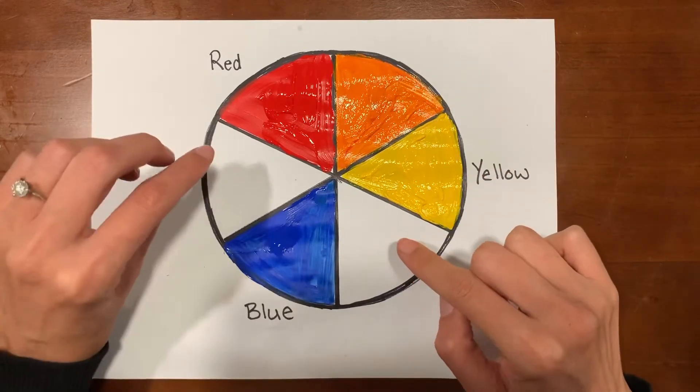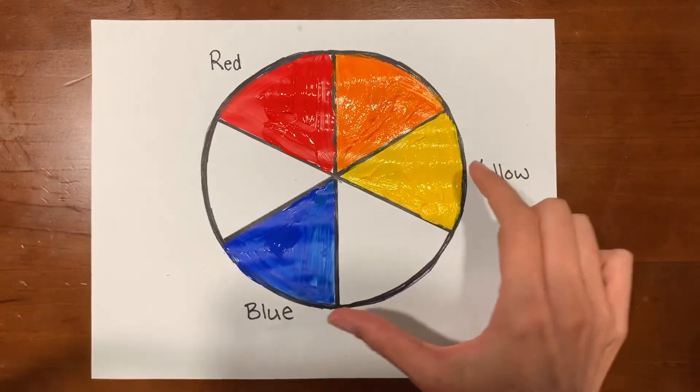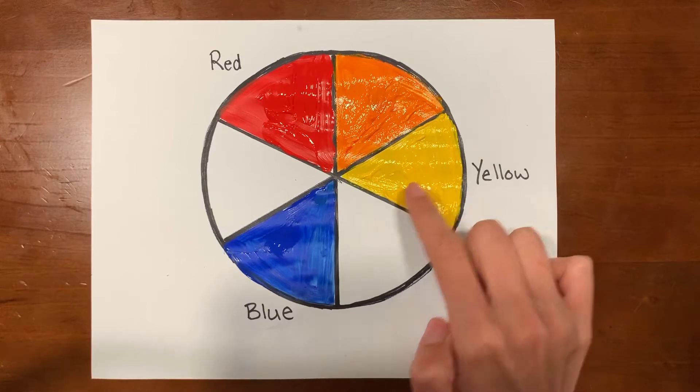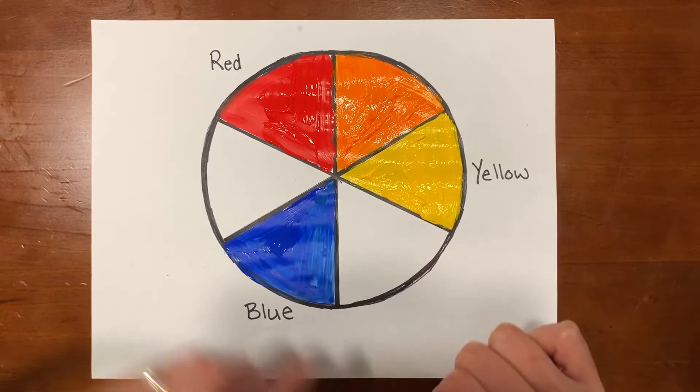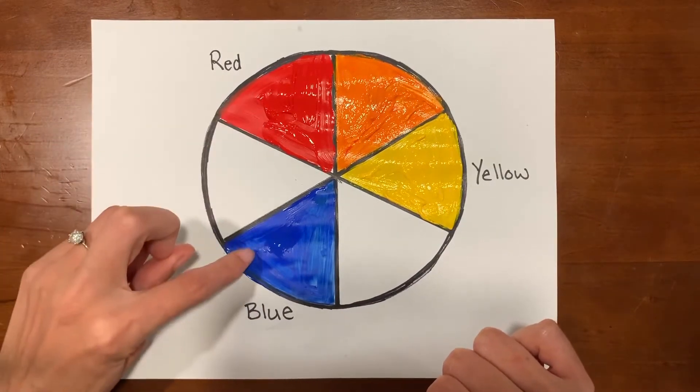Now let's see what other two secondary colors we can make. In this section right here I'm going to mix yellow and blue, and in the next one I'll mix red and blue.